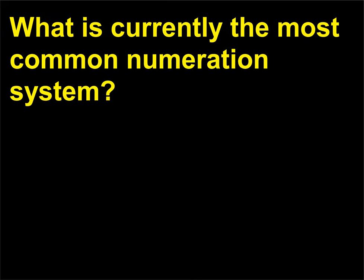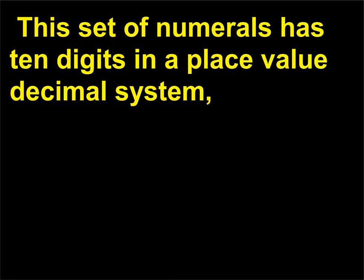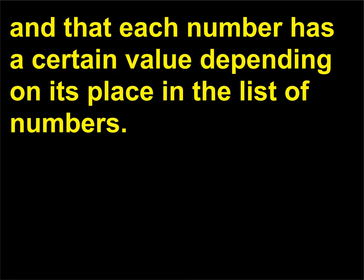What is currently the most common numeration system? The most common numeration system in use today is the Hindu-Arabic. This set of numerals has 10 digits in a place value decimal system, which is a fancy way of saying that a decimal system based on tens is an integral part of the system, and that each number has a certain value depending on its place in the list of numbers.